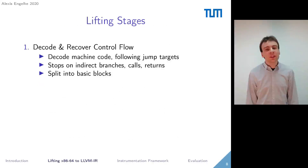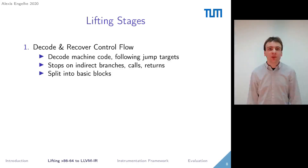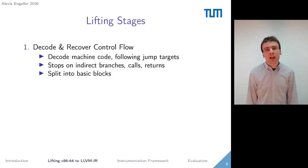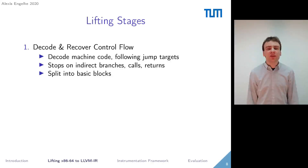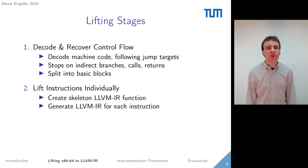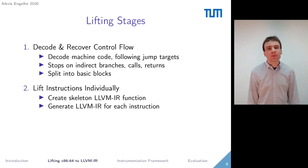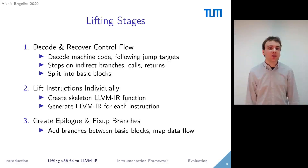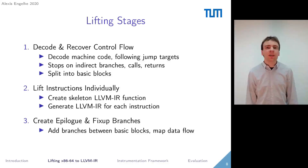The lifting happens in three stages. First, we decode instructions and discover the control flow: we start decoding machine code, follow jump targets, on conditional jumps we follow both targets, and only stop on indirect branches, calls, and returns. Once we have decoded a sequence of instructions, we split them into basic blocks. Second, we create a skeleton LLVM IR function and lift the instructions individually to LLVM IR, generating code in the corresponding basic blocks. Third, we create a function epilog, add branches between basic blocks, and map the data flow of registers between blocks — for those familiar with LLVM, this is realized using phi nodes.